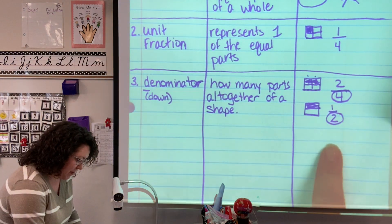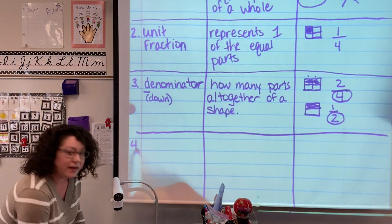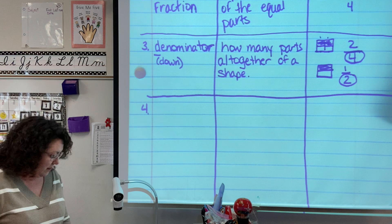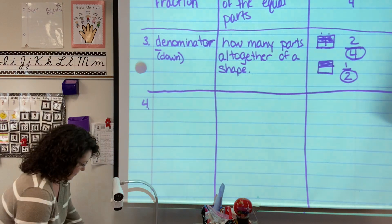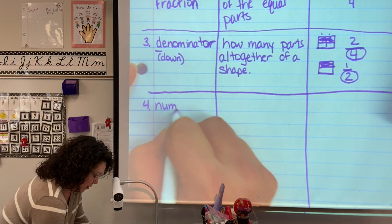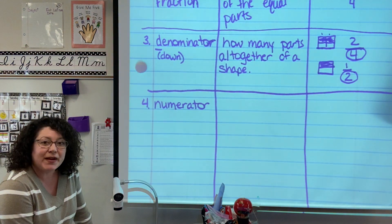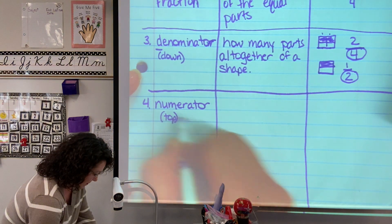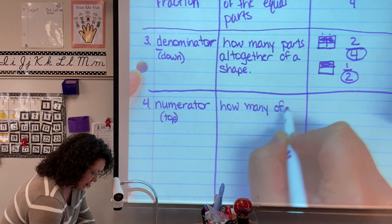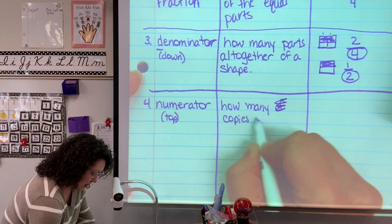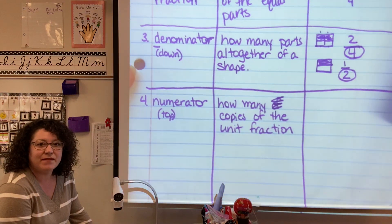Just like before, I go to the column that has the most text and then I draw the line underneath it to keep all of my words together. And we're going to do one more word. Now we know the bottom number; now we need to know the top number. And it is called the numerator. The numerator is the top number, and it tells us how many copies of the unit fraction.